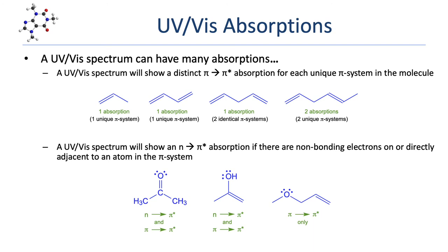It's certainly possible that a molecule could show multiple absorptions on a UV-Vis spectrum, since there are two possible types of excitation: pi-to-pi-star and n-to-pi-star. A UV-Vis spectrum will show a distinct absorption for each unique pi system in a molecule. The first molecule has only one pi system — one pi bond with two atoms — so it will show one unique pi-to-pi-star absorption. The second molecule has two pi bonds, but because they're conjugated together, this represents only one pi system, so it will also show only one absorption.